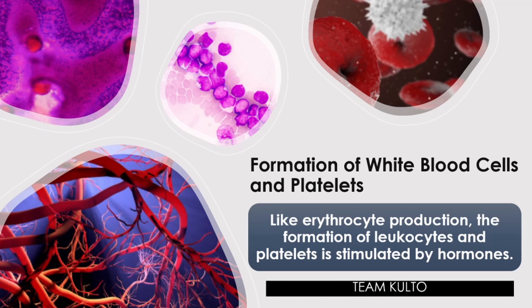Formation of white blood cells and platelets: just like erythrocyte production, the formation of leukocytes and platelets is stimulated by hormones. Most white blood cells and platelets are produced in the bone marrow — the soft fatty tissue inside bone cavities. Two types of white blood cells, T and B cells, collectively known as lymphocytes, are also produced in the lymph nodes and spleen, while T cells are produced and mature in the thymus gland.